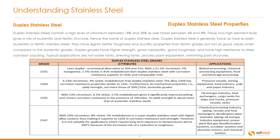Duplex grades have slightly better toughness and ductility than ferritic grades but not as good as austenitic grades. They have higher strength, good weldability, good toughness, and high resistance to stress corrosion cracking. Typical applications are hot water tanks, brewing tanks, process plant equipment, and swimming pool structures. A table below shows the grades with their attributes and typical applications.